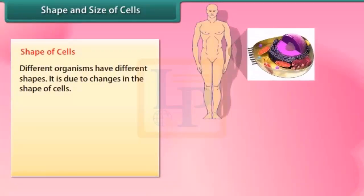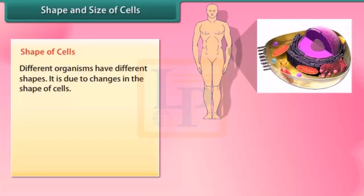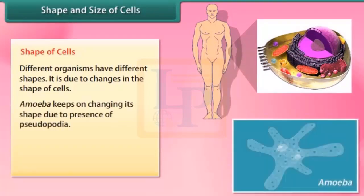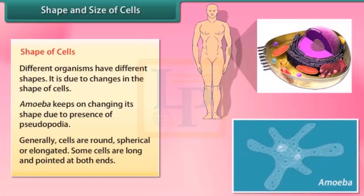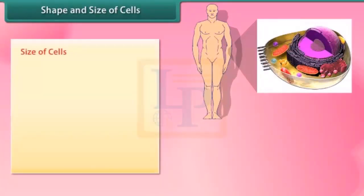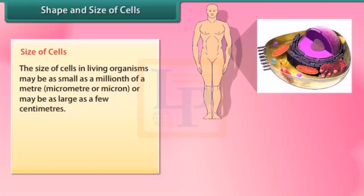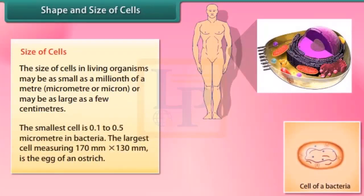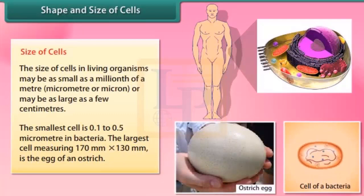Shape and size of cells. Different organisms have different shapes, and this is due to changes in the shape of cells. Amoeba keeps on changing its shape due to the presence of pseudopodia. Generally cells are round, spherical or elongated; some cells are long and pointed at both ends. The size of cells may be as small as a millionth of a meter (micrometer or micron), or as large as a few centimeters. The smallest cell is 0.1 to 0.5 micrometers in bacteria. The largest cell, measuring 170 mm × 130 mm, is the egg of an ostrich.